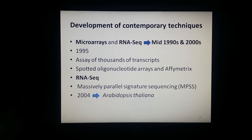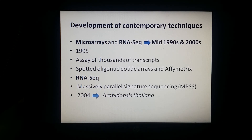RNA sequencing refers to the sequencing of transcript complementary DNAs. This technique has been heavily influenced by the development of high-throughput sequencing technologies. Massively Parallel Signature Sequencing, or MPSS, is an early example of a high-throughput sequencing technology based on generating 16 to 20 base pair sequences through a complex series of hybridization. It was first used in 2004 to validate the expression of 10^4 genes.